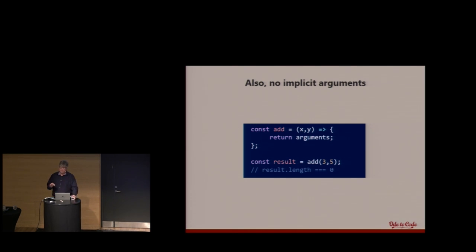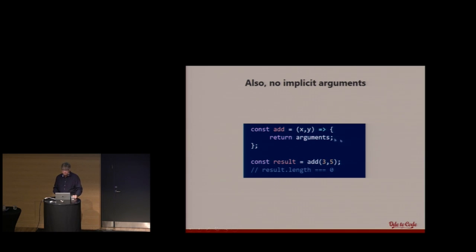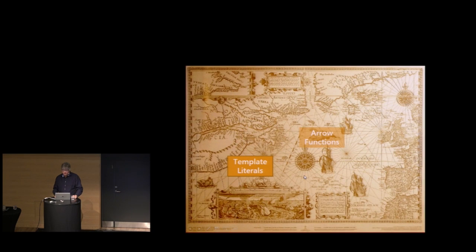Arrow functions are entirely different — there's no way to change the `this` reference and they're not normal functions. They have no implicit arguments variable. Typically in JavaScript when you invoke a function, you can look at `arguments` and it looks like an array of everything that was passed in. But not with arrow functions. The `arguments` variable, if you're inside of another function, would be the arguments from the outer function — there's no implicit arguments. Evaluating that code would say `result.length` is zero. So that's arrow functions.